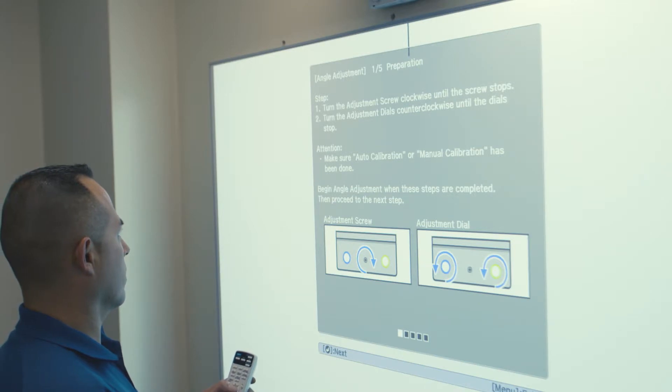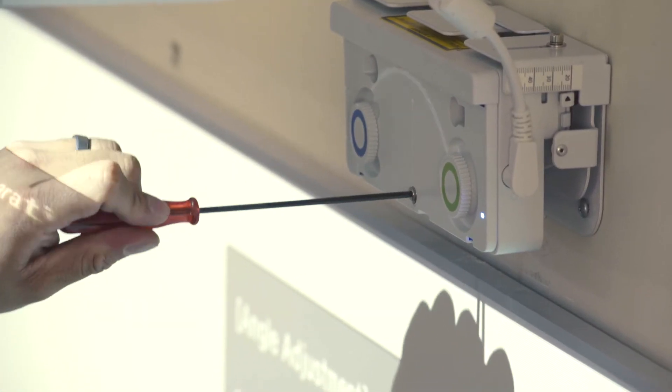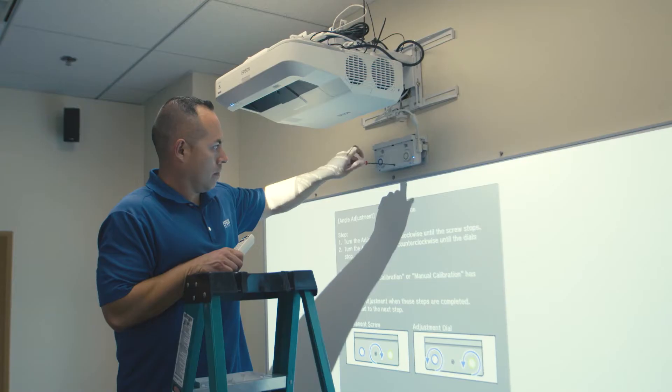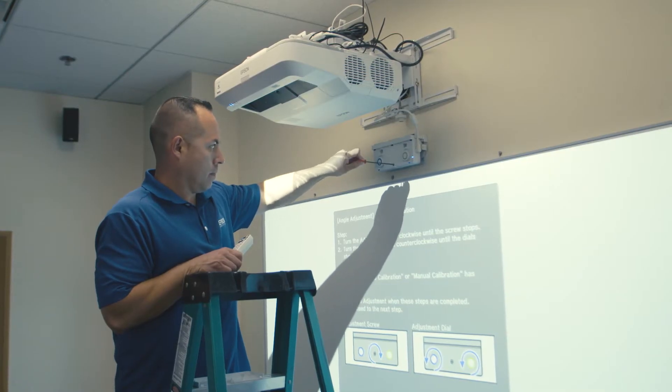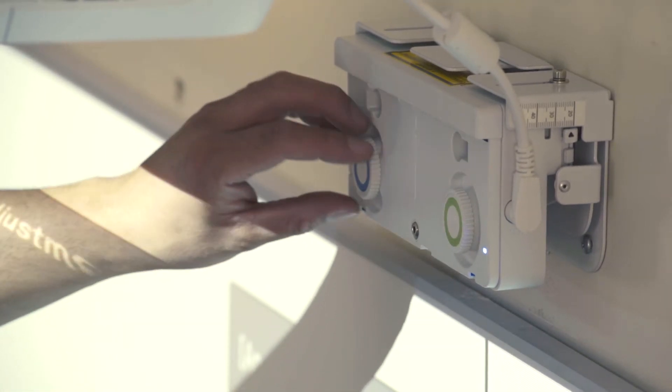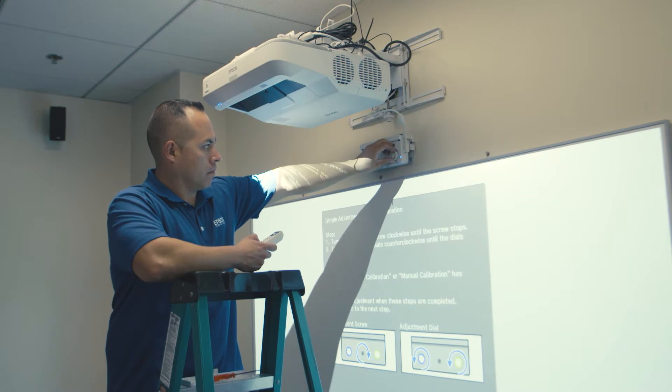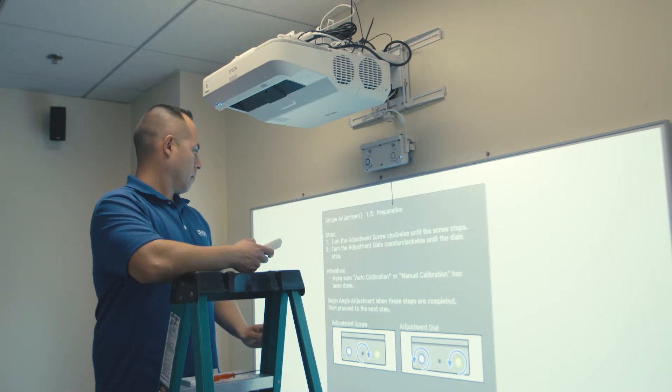Following the on-screen instructions, you will turn the long adjustment screw in the center of the touch unit clockwise until it stops. Next, turn the green and blue dials on the touch module counter-clockwise until they stop. Do not overturn. Then press Enter on the remote.